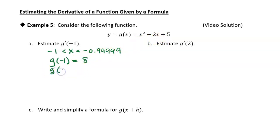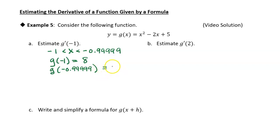Now, g of negative 0.99999 — I have five nines. You have to be careful to have the same number of nines. I'm just going to plug this into my calculator. When I plug it in, I get 7.99996. So I took negative 0.99999 and plugged it into the formula for g of x.